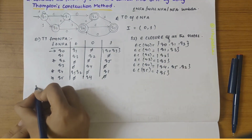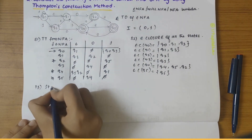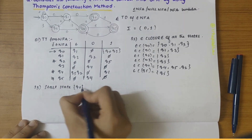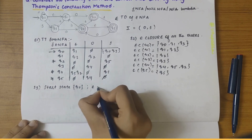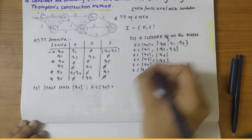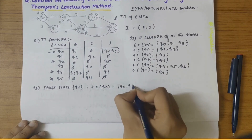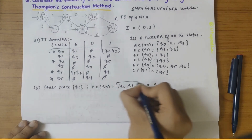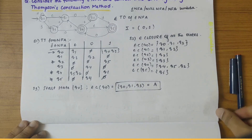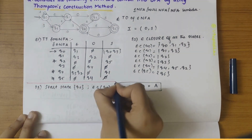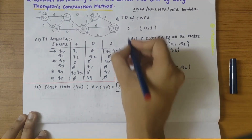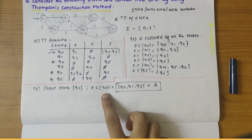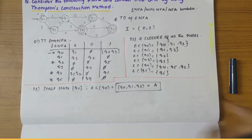Our next step is to take the start state Q0 and find its epsilon closure. Epsilon closure of Q0 gives {Q0, Q1, Q3}. We will take this as constant A.